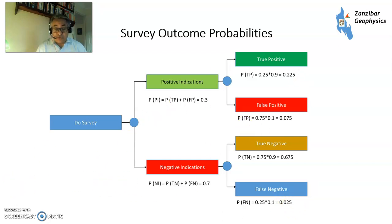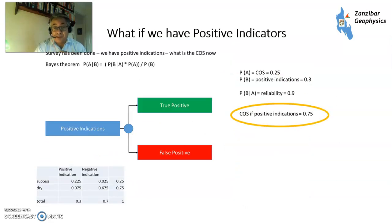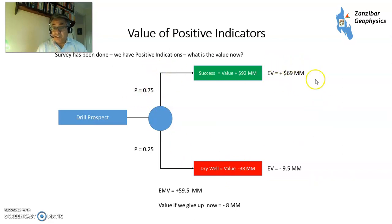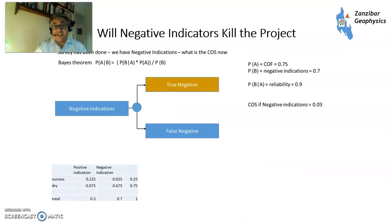Looking at the positive indicator branch — comprising true positives and false positives — you get a 75% chance of success if you have positive indicators. That's not 100% but much better than before. The value of success has now gone down to $92 million because you need to add the cost of the survey, and the failure value has also gone down to minus $38 million. So 75% of $92M gives $69M and 25% of minus $38M gives minus $9.5M, giving an EMV of $59.5 million if you have positive indicators. The value of giving up at this point would be minus $8 million — the cost of the survey.